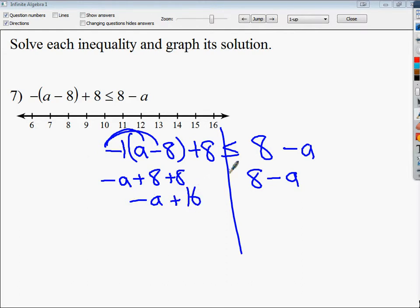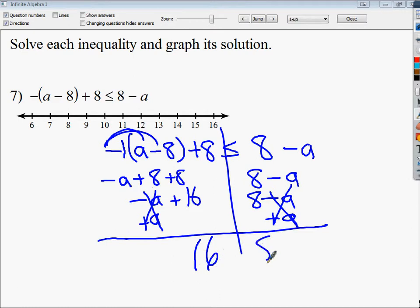I'm not going to subtract 8 from both because they're on the same side of the line. Same side, same operation. I'm going to move the A now. Those cancel and these cancel as well. My statement is that 16 is less than or equal to 8. Obviously, 16 is not equal to 8, and even more obviously, it's not less than 8. It's more. If it was negative 16, the answer would be true, but it's not.